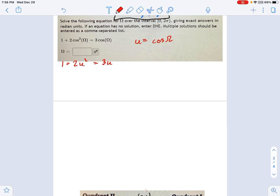1 plus 2u squared equals 3u. Well, that looks a lot like a trinomial to me. It just isn't all on one side. So I'm going to move things around as usual. 2u squared minus 3u plus 1 equals 0. And let's try our factoring on this.